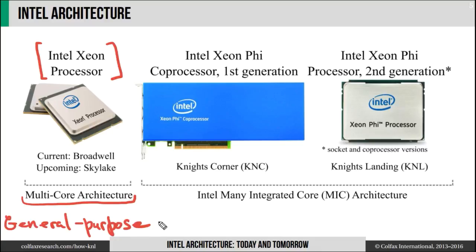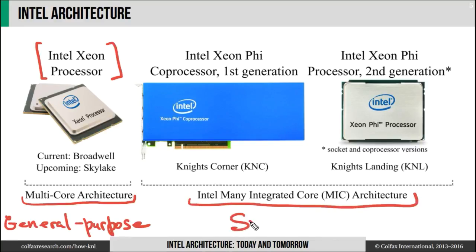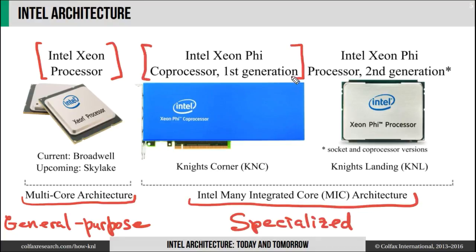In addition to the multi-core architecture, Intel recently introduced the many integrated core, or MIC architecture. This architecture is specialized for computing. Representing this architecture are Intel Xeon Phi processors and coprocessors. The first generation of Intel Xeon Phi was introduced in 2012, and you may have heard of it by its code name Knight's Corner, or KNC.